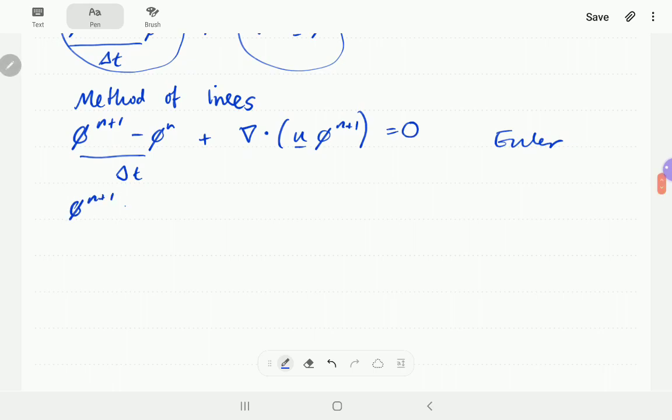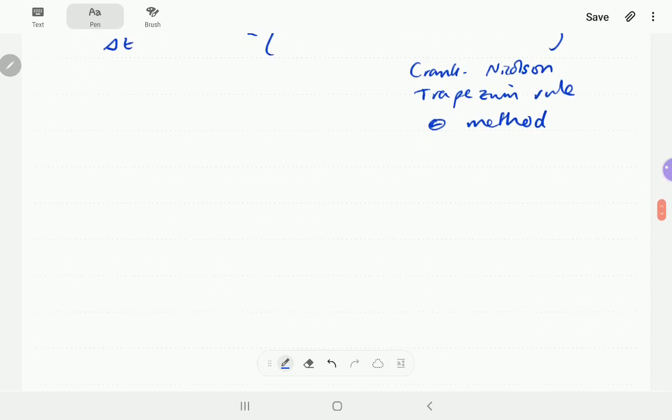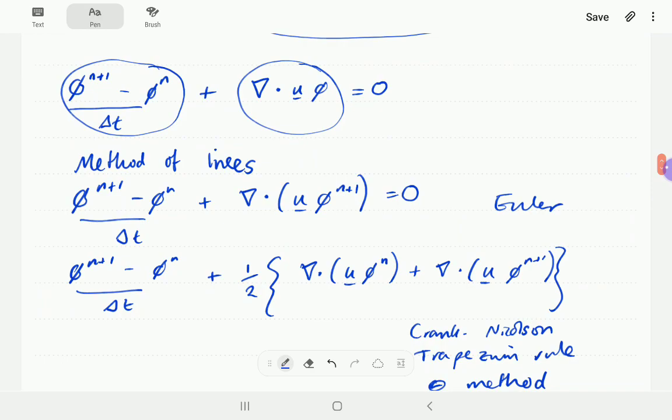So then you'd have phi n plus 1 minus phi n over delta t plus. So now it's half of the time-step n plus half of time-step n plus 1. Half of the divergence at time-level n plus the divergence at time-level n plus 1. So that is Crank-Nicolson, also known as the trapezium rule or the theta method.